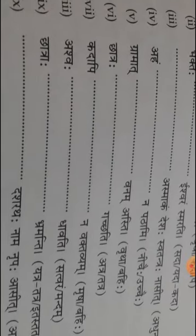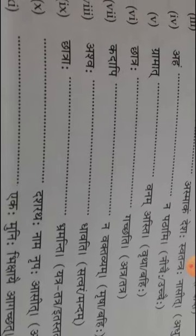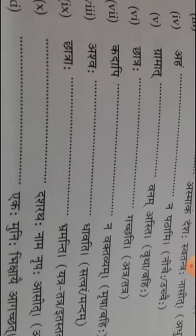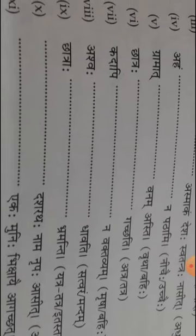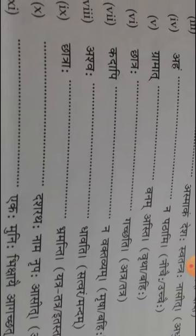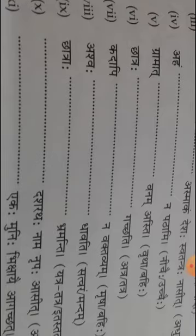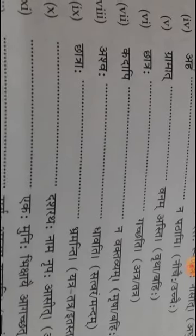Number five. Grama dash banamasti. Vitha means inven, vahi means outside. Number six. Chatra dash gachati. Atra means here, tatra daya.